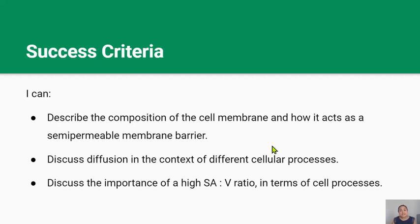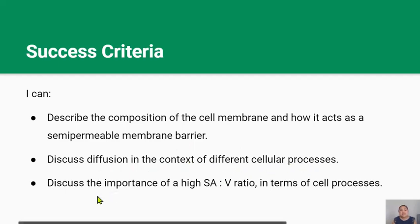By the end of this lesson you should be able to describe the composition of a cell membrane and how it acts as a semi-permeable membrane barrier, discuss how diffusion is in the context of different cellular processes, and describe the importance of a high surface area to volume ratio in terms of cell processes.